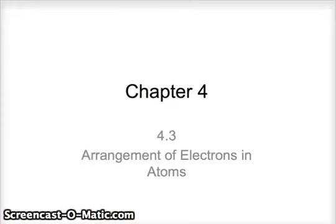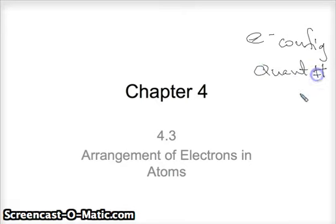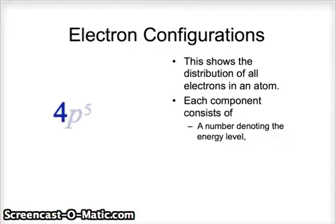All right guys, so quickly we're going to go through electron arrangements, arrangement of electrons and atoms. Basically we're going to be talking electron configurations. When we talk electron configurations, what we're doing is we are taking the quantum numbers and basically making that explain how the electrons are organized within our electron cloud.